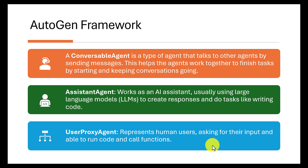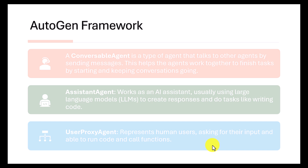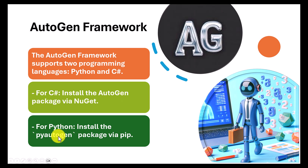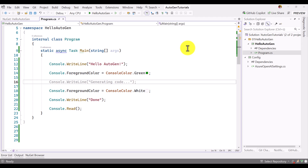The two-agent demo will have one agent raise a question and another agent respond — a simple two-way communication. AutoGen framework supports two programming languages: Python and C#. Python is the core of AutoGen framework, and it has recently been extended to C# as well. For C# you install a NuGet package; for Python you install the PyAutoGen pip package.